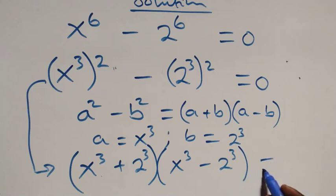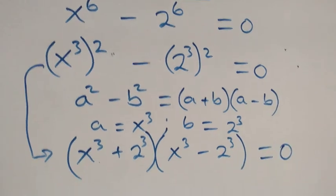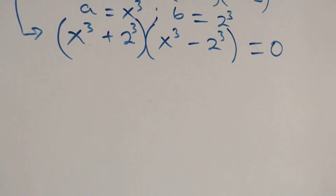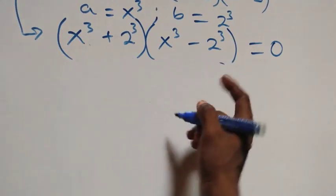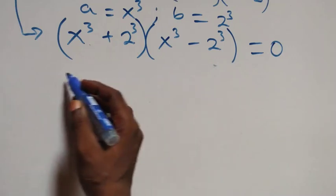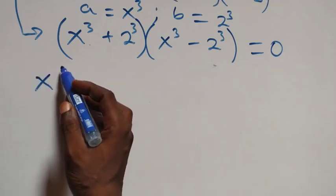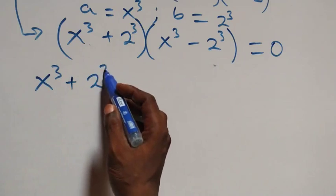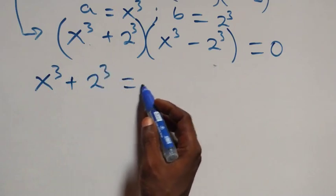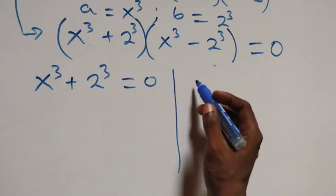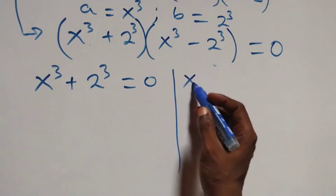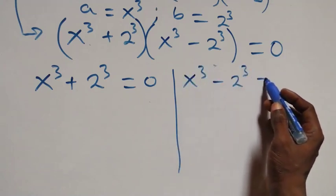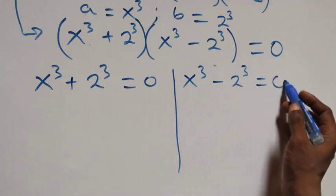That equals zero. From here we have two possible cases: x raised to power 3 plus 2 raised to power 3 equals zero, or x raised to power 3 minus 2 raised to power 3 equals zero.